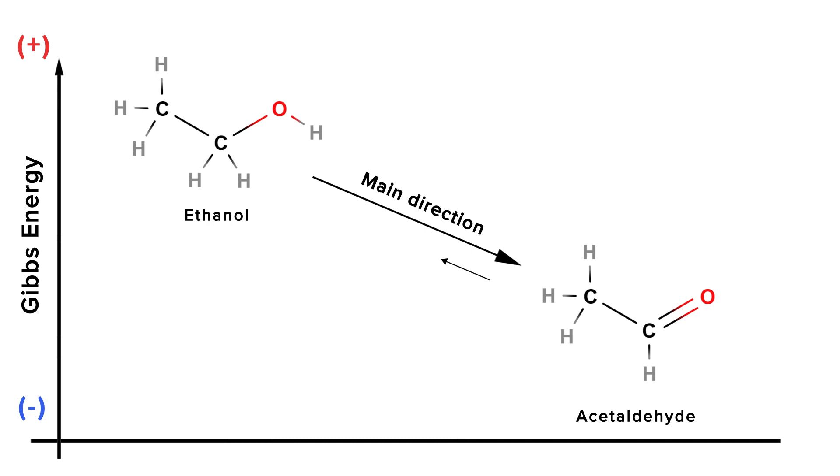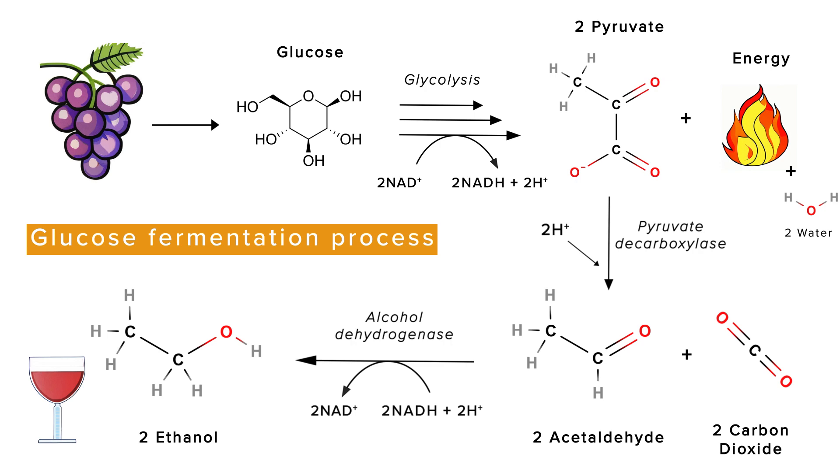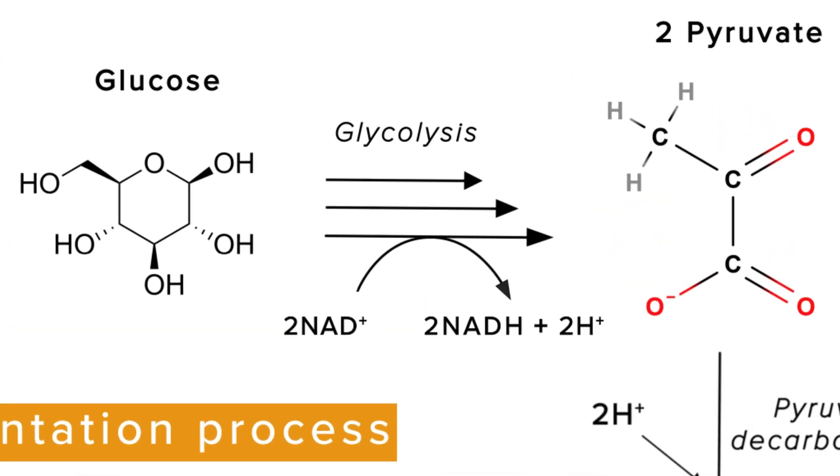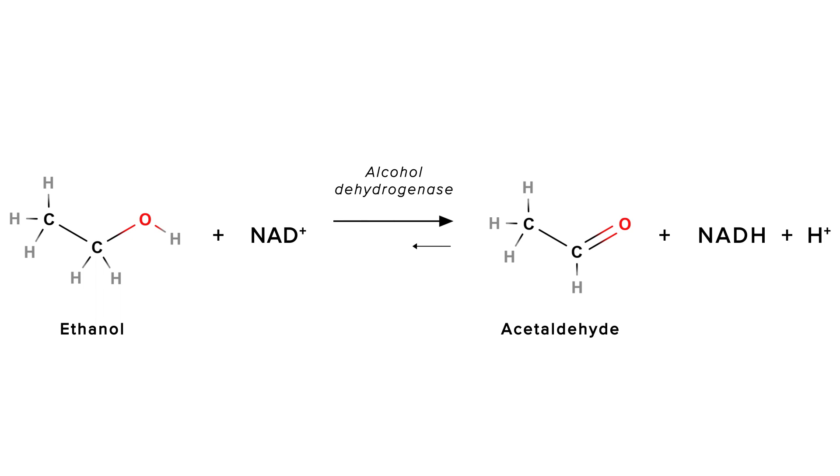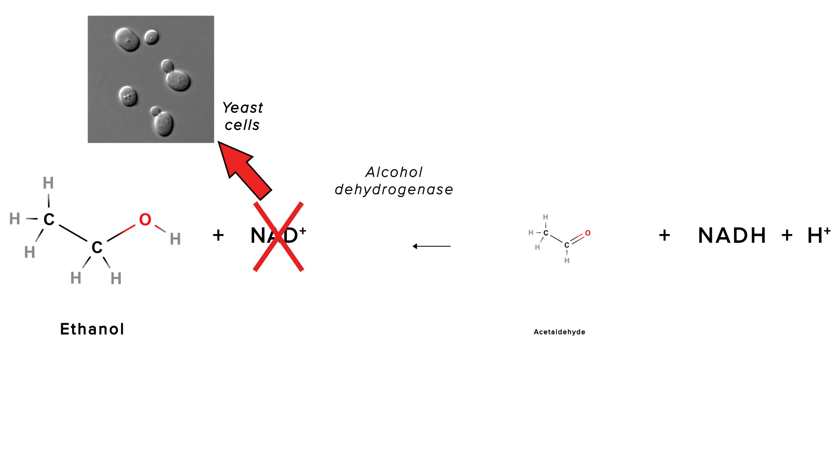But now this last step is a bit counterintuitive because we've been saying throughout this video that ethanol has a higher Gibbs energy. So it's not easy for acetaldehyde to become ethanol. Then how is this reaction even possible? Well, look at what's happening here. During sugar fermentation, yeast cells are using all their NAD plus to produce high amounts of NADH. And if we remember the ethanol to acetaldehyde reaction, you will see that ethanol needs NAD plus to react. So if there is no NAD plus, this conversion to acetaldehyde will be completely cancelled out. Now, with no NAD plus available, the only reaction that can happen is the slow conversion from acetaldehyde to ethanol. And of course, yeast cells will keep using all the NAD plus they have to ferment more and more sugars. So in the end, most of the acetaldehyde will end up becoming ethanol.